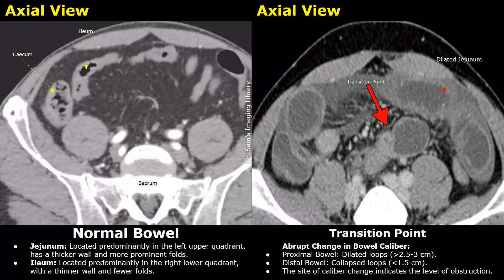Here is another image showing dilated jejunum. This point is the transition point — you can see normal collapsed bowel distal to the transition point and the dilated bowel proximal to the transition point. So this point is the site of obstruction.